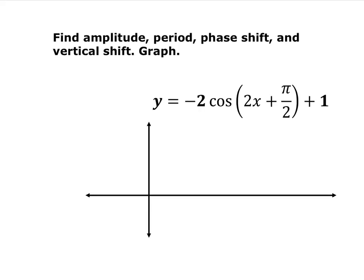Now pause the video and find the amplitude, period, phase shift, and vertical shift for the new function y equals negative 2 cosine of 2x plus π over 2, plus 1. Make sure the first thing you always do is factor out the 2 that is multiplied by x. That's always your first step — factor that out before you start finding all of these items.